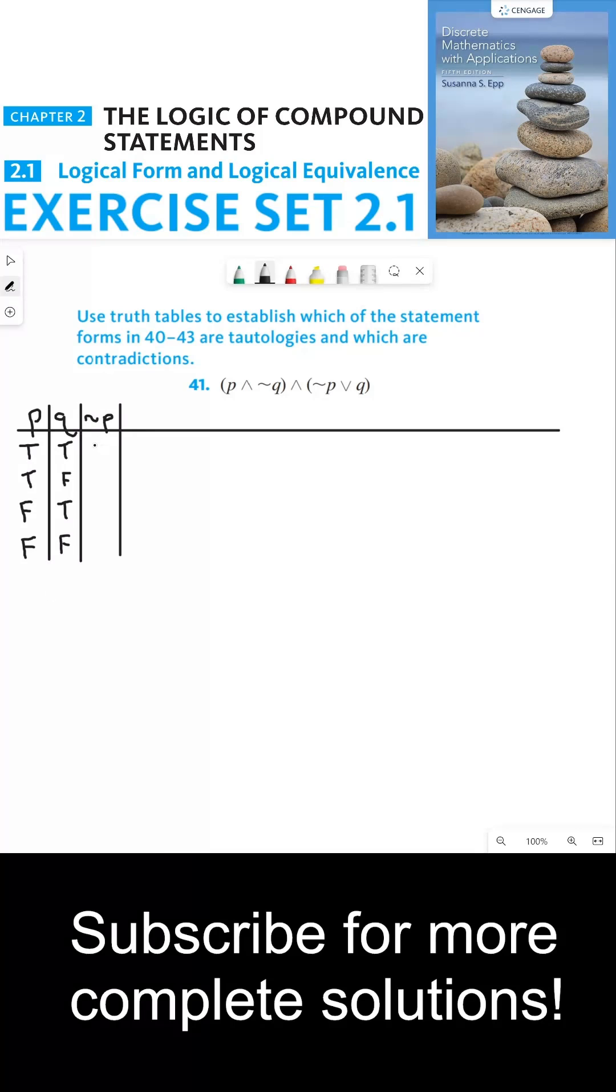To negate P we need to flip the truth values from column P which is the first column.